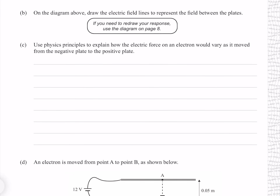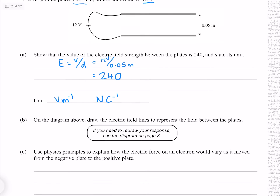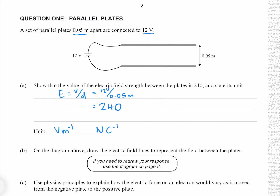On the diagram above, draw the electric field lines to represent the field between the plates. The long side of our voltage source is the positive side, making this the positive plate and this one the negative. Between the plates we're going to see parallel field lines roughly the same distance apart, and at the ends we're going to see them curve. Our field lines always point towards the negative plate.